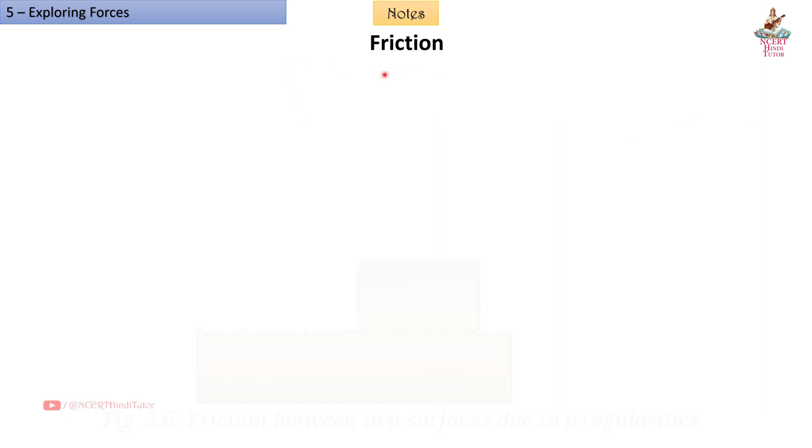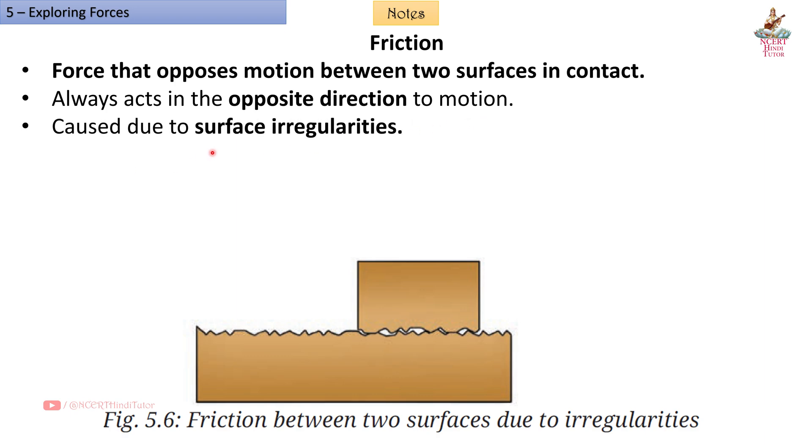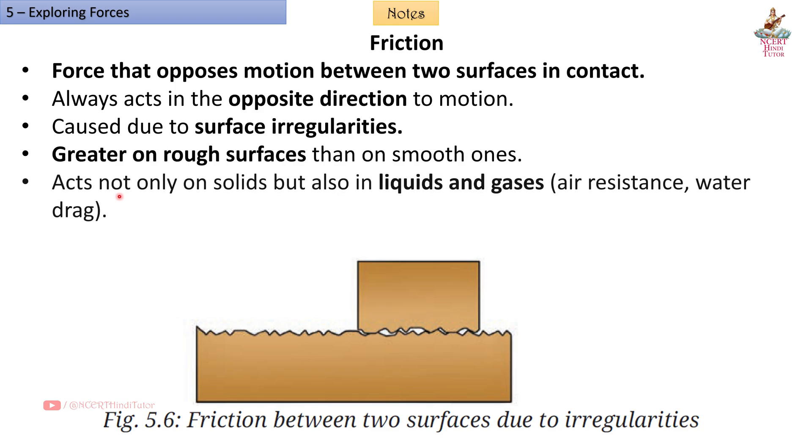Friction - force that opposes motion between two surfaces in contact. Always acts in the opposite direction of motion. Caused due to surface irregularities. Greater on rough surfaces than on smooth ones. Acts not only on solids but also in liquids and gases, like air resistance and water drag. Helpful in walking, writing, and braking but can also cause wear and tear.